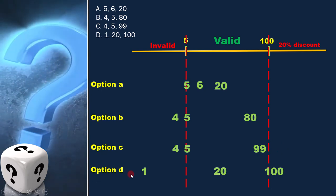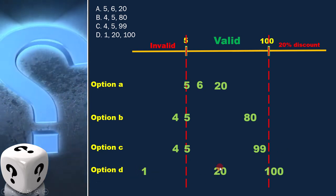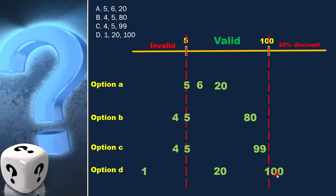In option D, 1 and 20 are not in the boundary and 100 is at the boundary.